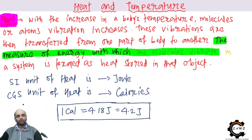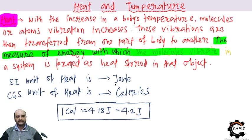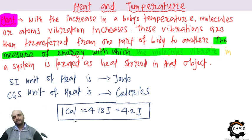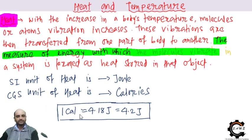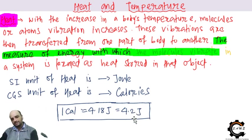Even if you have not fully understood, don't worry — when I compare heat and temperature you will definitely understand the difference. Now, the unit of heat is Joules, named in honor of the scientist Joule. In CGS units — centimeter gram seconds — the unit of heat is calories. One calorie is equivalent to 4.18 Joules, which we round to approximately 4.2 Joules. Remember this for exams where the given value may be in calories and you need to convert to Joules.